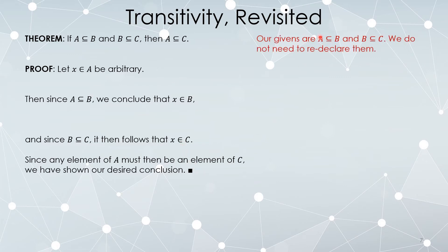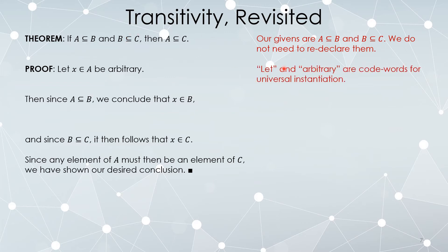Let's walk through this proof again. The givens are A ⊆ B and B ⊆ C. Notice we didn't start by re-declaring the givens — they're already written on the page, and your reader knows they can be referred to. The words 'let' and 'arbitrary' are code words for universal instantiation. The claim is that for any element of the universe, if it is in A then it is in C — so we pick a totally arbitrary element of A. The only thing assumed about X is that it's in A, because that is the hypothesis of the conditional statement.